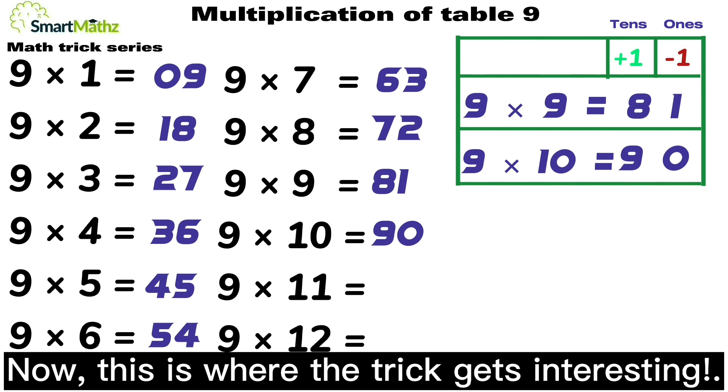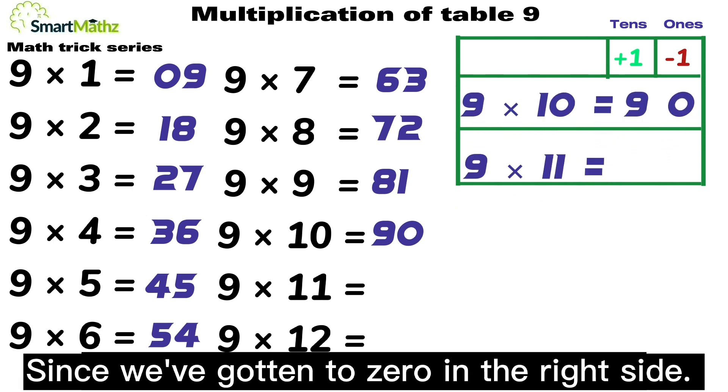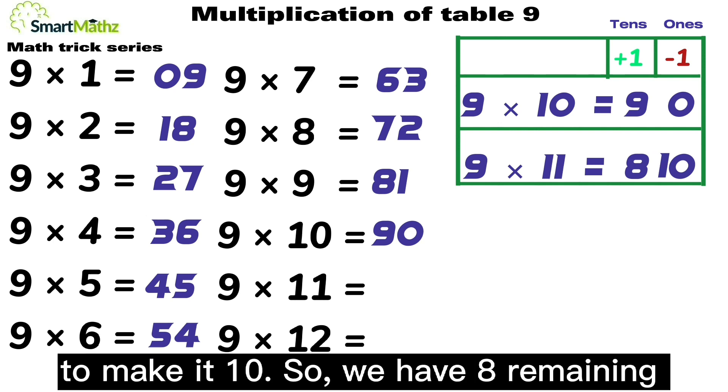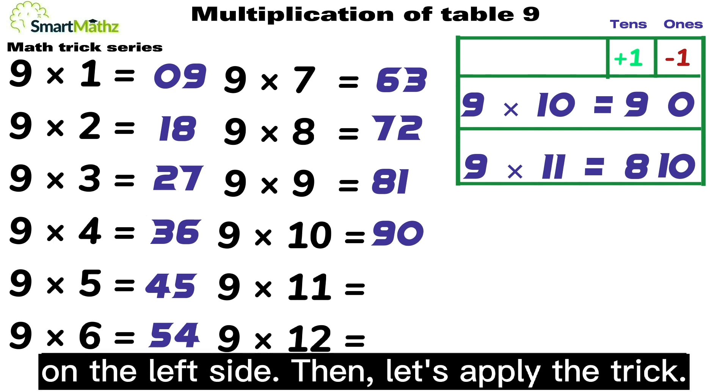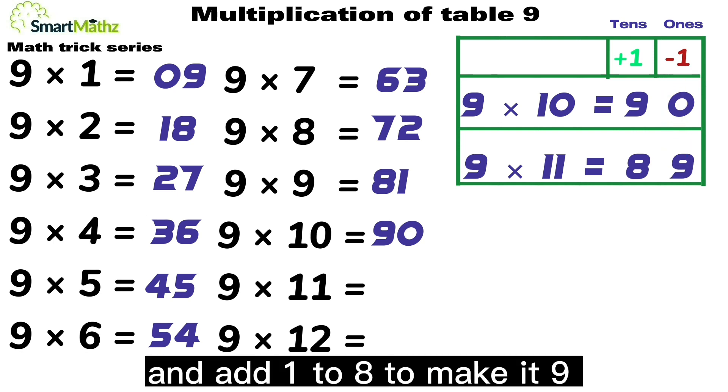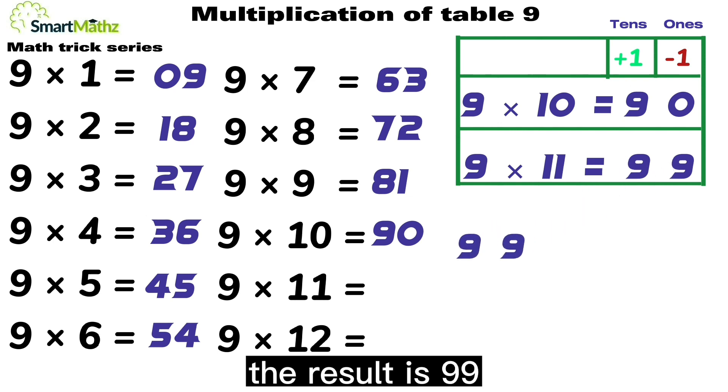Now, this is where the trick gets interesting. Since we've gotten to 0 in the right side, just take 1 from 9 and put it with 0 to make it 10. So we have 8 remaining on the left side. Then let's apply the trick. 9 times 11, subtract 1 from 10 to make it 9, and add 1 to 8 to make it 9. The result is 99.